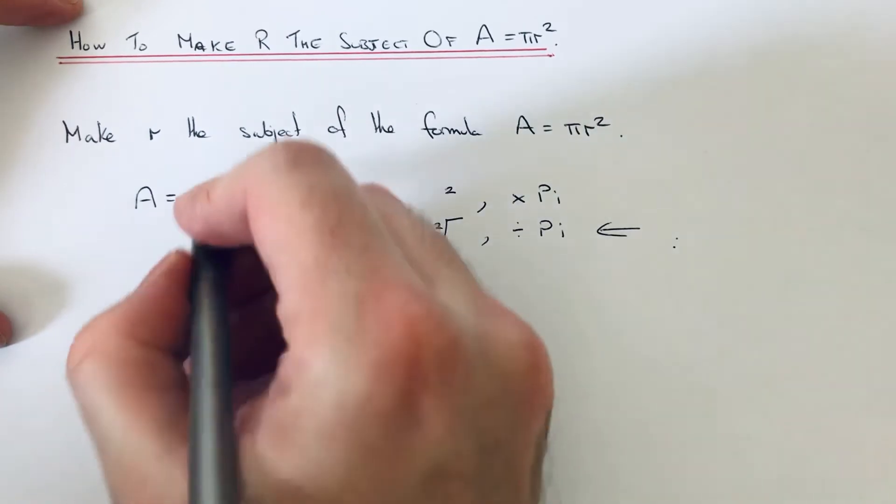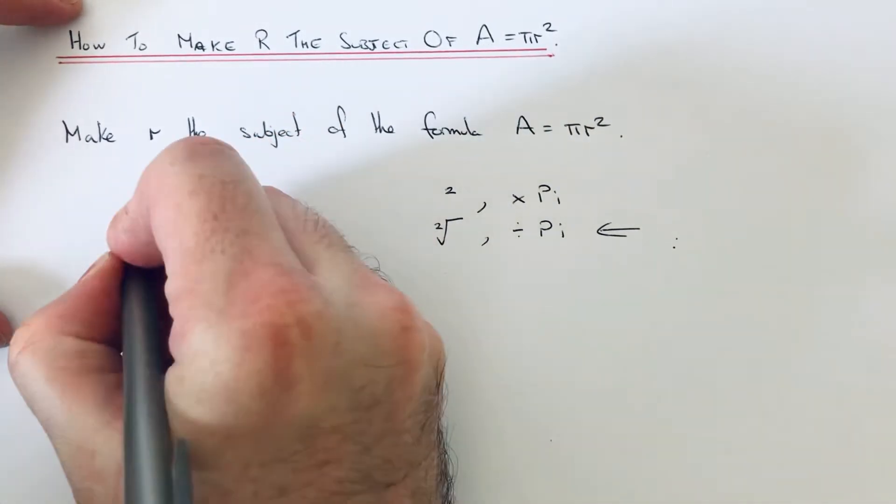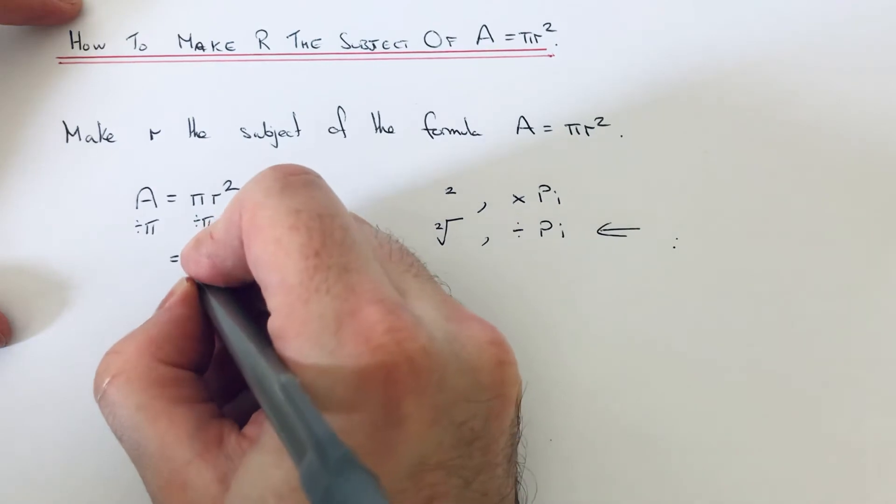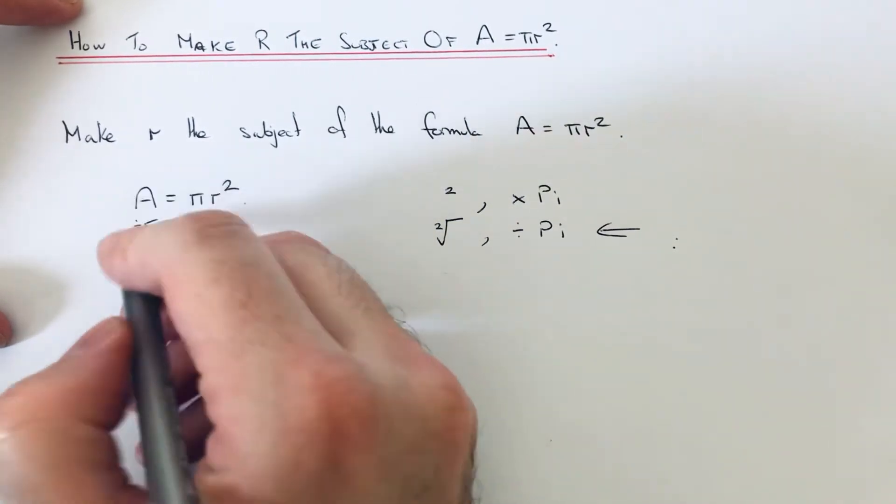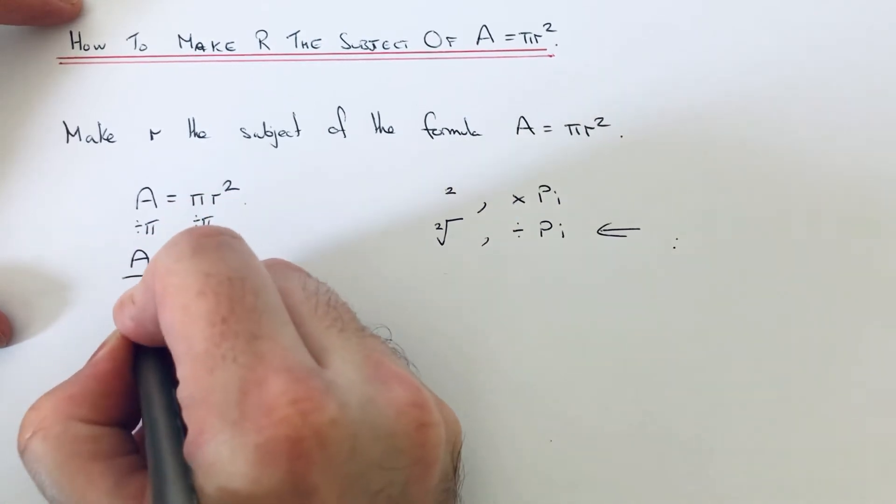First of all, let's divide by pi. That will give us R squared on the right hand side, and on the left we're going to write that as A over pi.